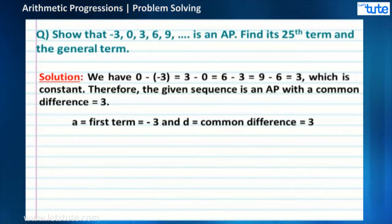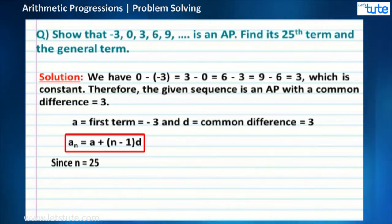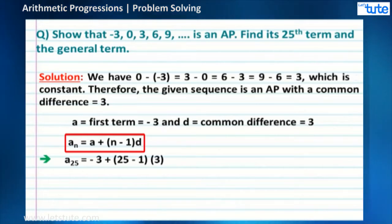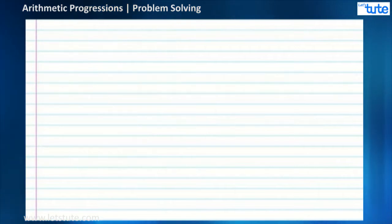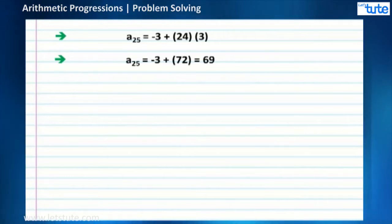Let me introduce a formula which we are going to repeatedly use in this chapter. The formula is: an = a + (n-1) × d. Since we have to find out the 25th term, let us substitute n = 25 in the formula. We get a25 = -3 + (25-1) × 3 = -3 + 24 × 3 = -3 + 72 = 69.